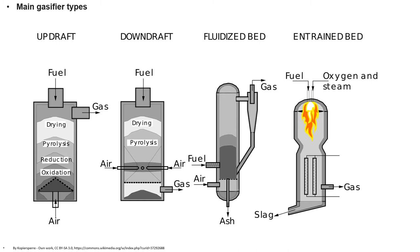During both World Wars, especially World War 2, the need for fuel from gasification re-emerged due to petroleum shortages. Wood gas generators called gasogenes were used to power motor vehicles in Europe. By 1945, trucks, buses, and agricultural machines were powered by gasification, with an estimated 9 million vehicles running on producer gas worldwide. The gasification process is carried out using a gasifier, with types including updraft, downdraft, fluidized bed, and entrained bed.